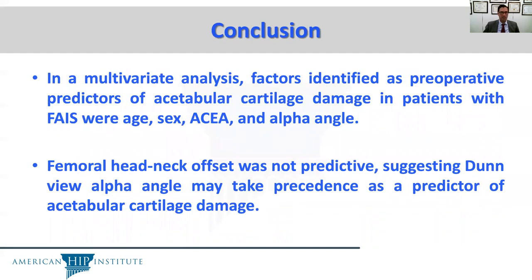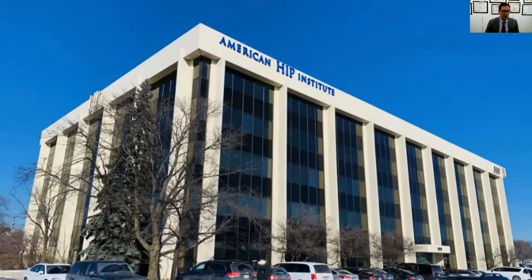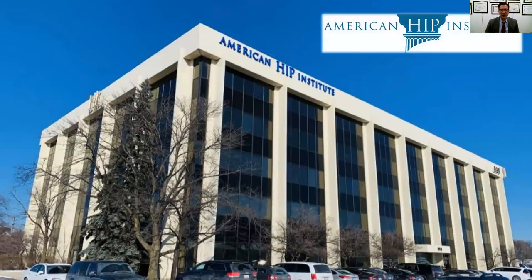In conclusion, in a multivariate analysis, factors identified as preoperative predictors of acetabular cartilage damage in patients with FAI were age, sex, anterior center edge angle, and alpha angle. The femoral head-neck offset, interestingly, was not predictive, suggesting that the Dunn-View alpha angle may take precedence over the offset as a predictor of acetabular cartilage damage. Thank you very much.